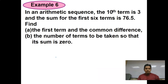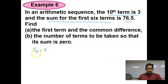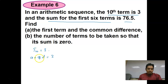In an arithmetic sequence, the 10th term is 3 and the sum of the first 6 terms is 76.5. Find the first term and the common difference. The 10th term = 3 means A + (10−1)D = 3, so A + 9D = 3 (Equation 1).